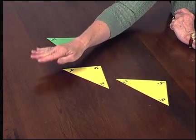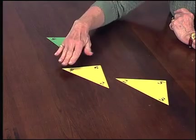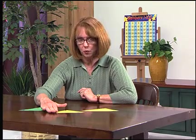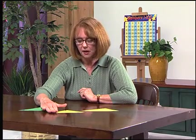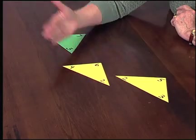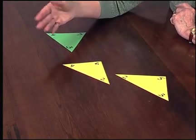To practice missing addends, we can cover up another part of the triangle: two plus something equals six. We guess four, we lift it off, and see if we're right.